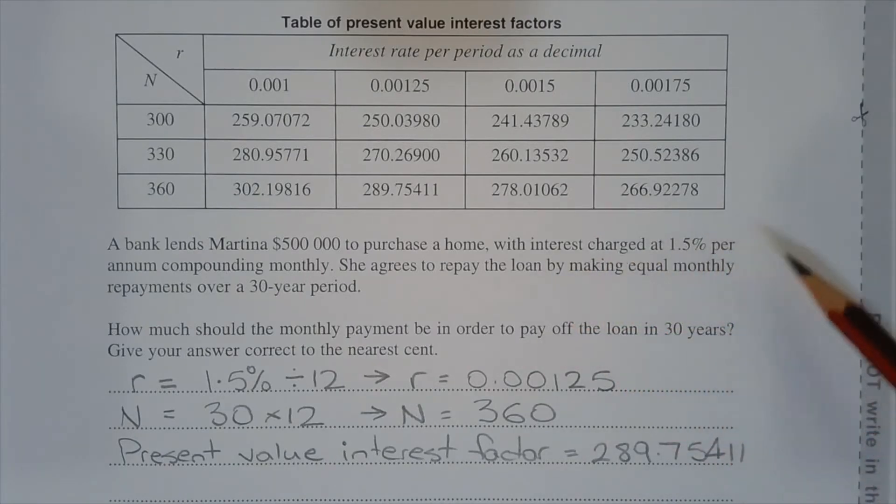Interest is charged at 1.5% per annum compounding monthly, so the monthly interest rate is found by taking 1.5% and dividing it by 12, and r is equal to 0.00125 as a decimal.